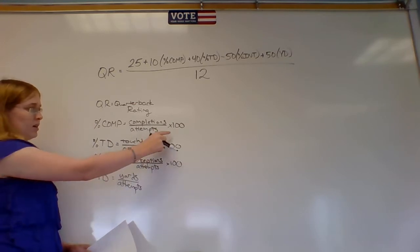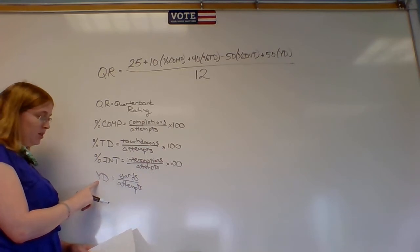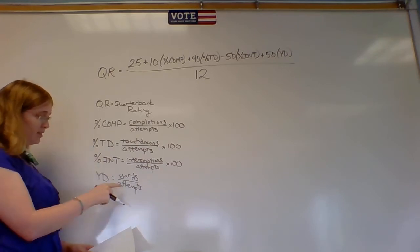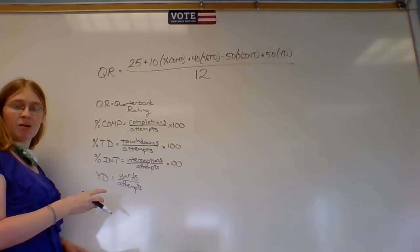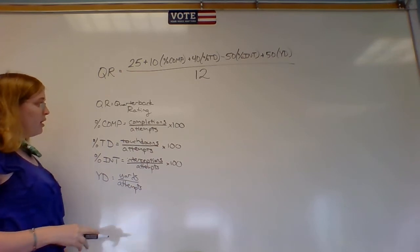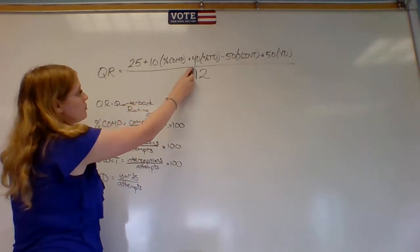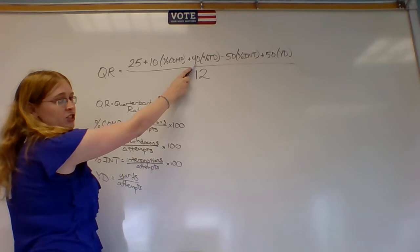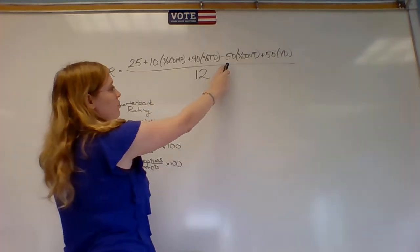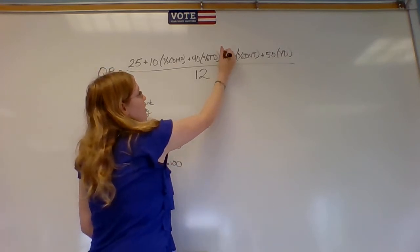And last we've got YD which is yards over attempts. Notice these three are percents, they have to multiply by 100 to make it a percent. But the yards is not a percent because you run a lot more yards than you have attempts, and it is not multiplied by 100.